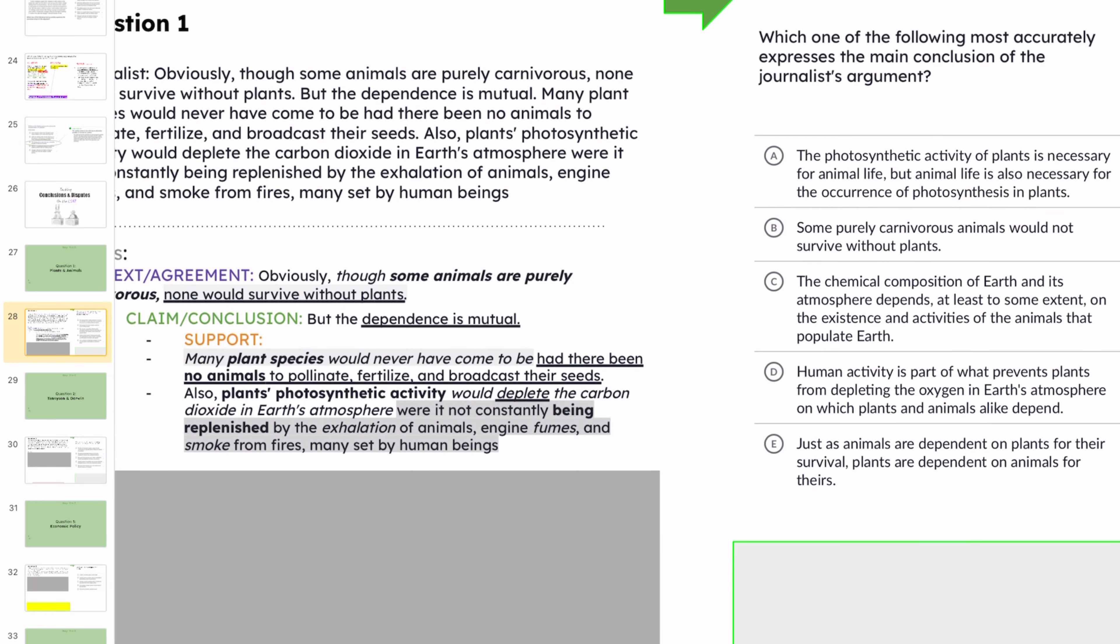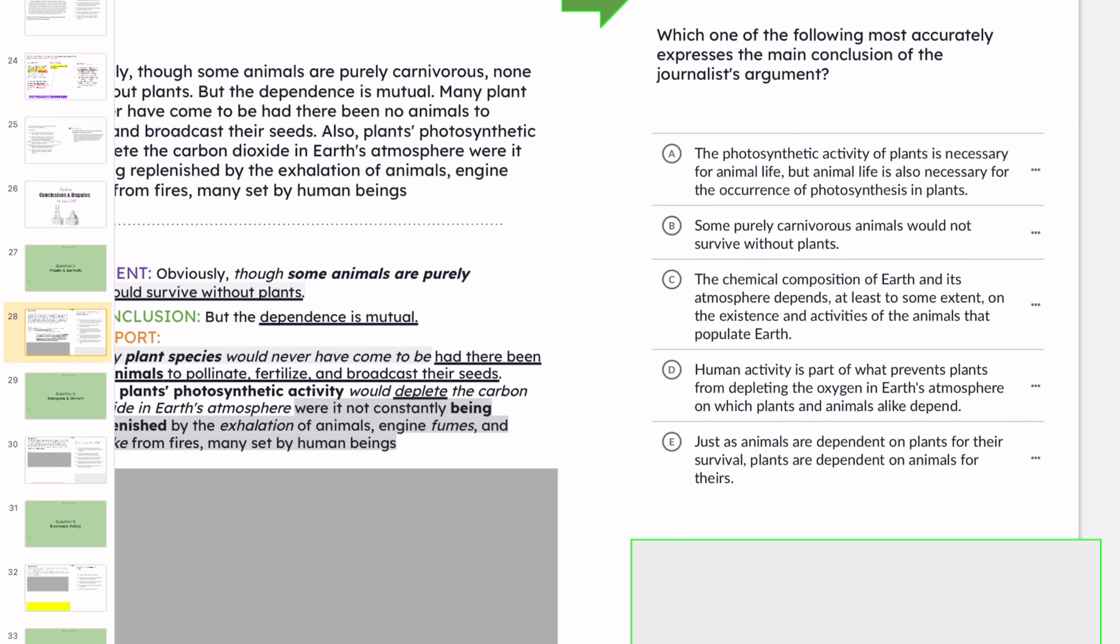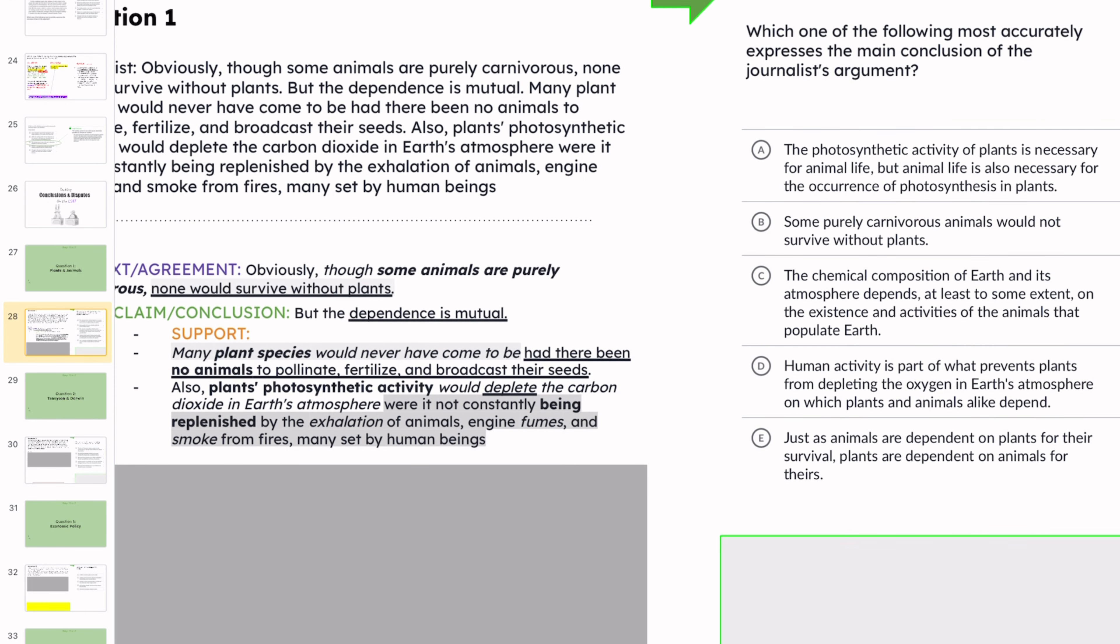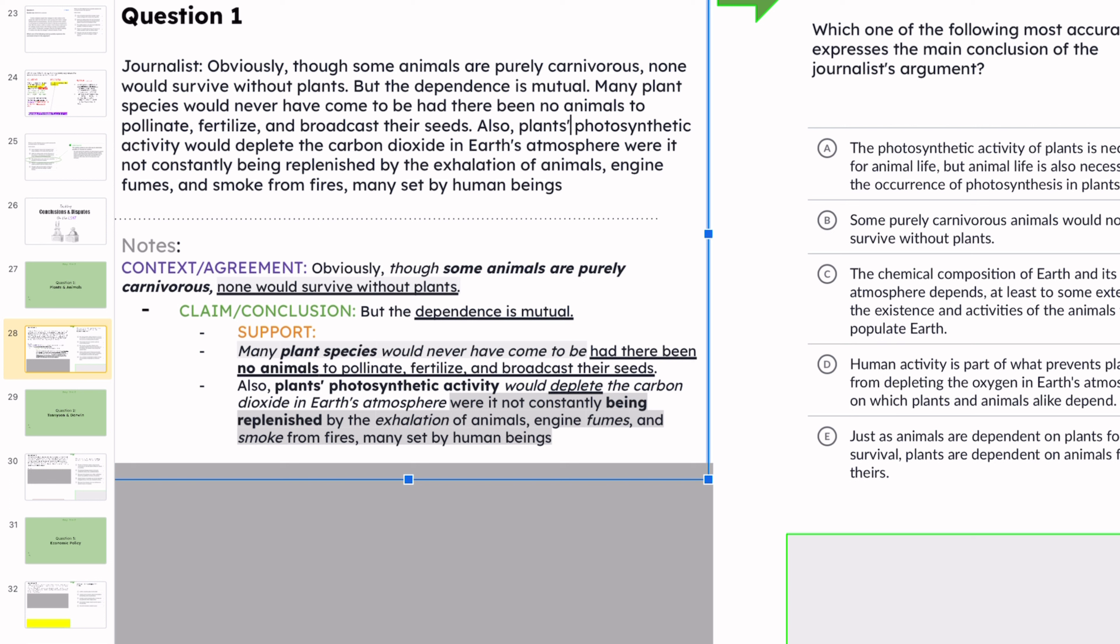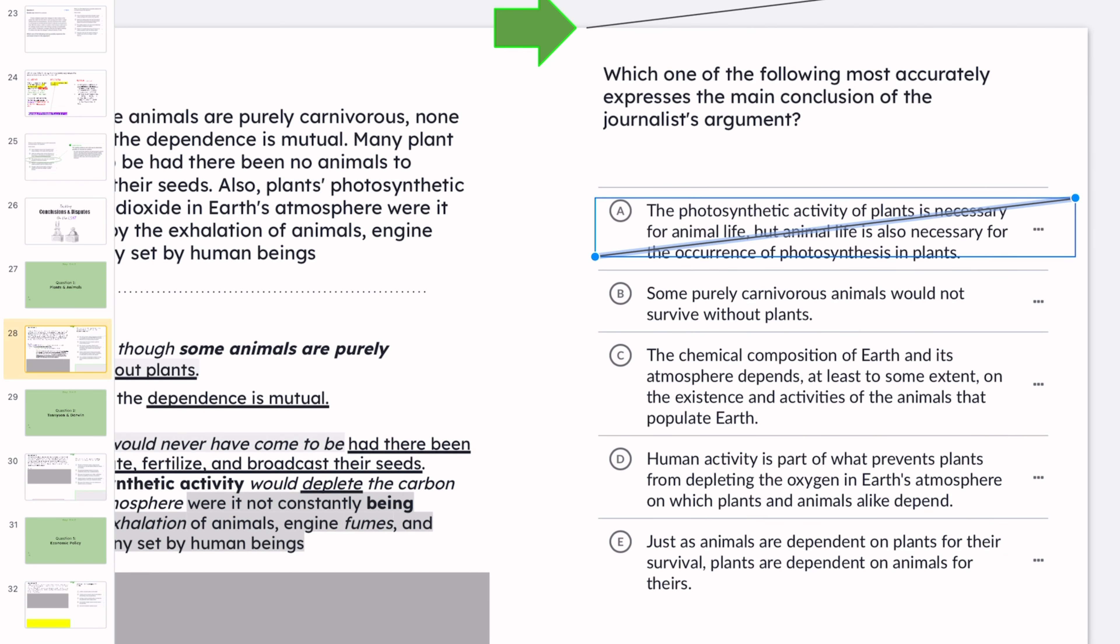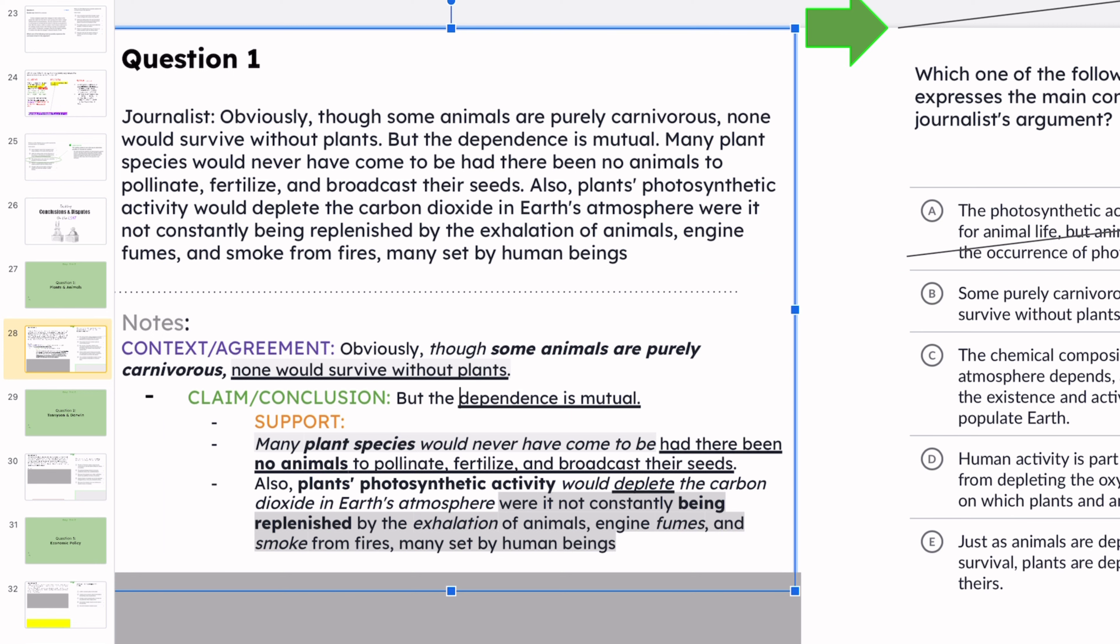So we're looking for the conclusion that the dependence is mutual. So A, the photosynthetic activity of plants is necessary for animal life, but animal life is also necessary for the occurrence of photosynthesis in plants. It's close, but it's very specific around photosynthesis and they only mentioned the photosynthesis here once. They also talked about pollinating, fertilizing, and broadcasting. So we can cross this one out because it's too specific. Some purely carnivorous animals would not survive without plants. That's true, but that's not the conclusion we're looking for. The dependence is mutual.